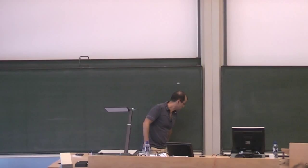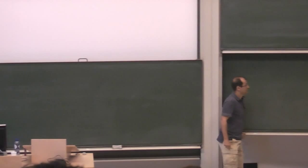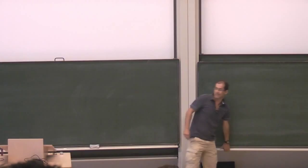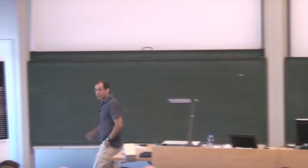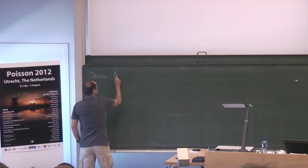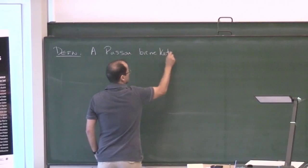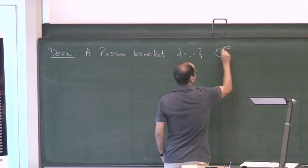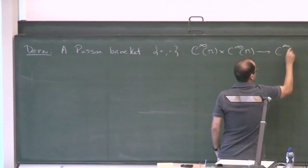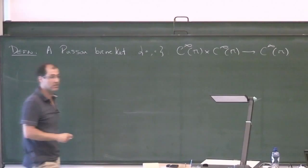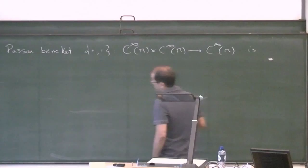Today's lecture will be about the origins of Poisson geometry, at least as I see it. I don't claim any historical accuracy. So let's start with the definition of the Poisson bracket. This will be an operation on smooth functions on manifolds. This has to be bilinear, symmetric, and satisfy the Jacobi identity — so it's a Lie bracket.